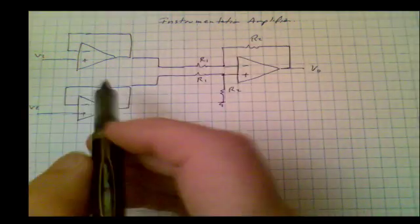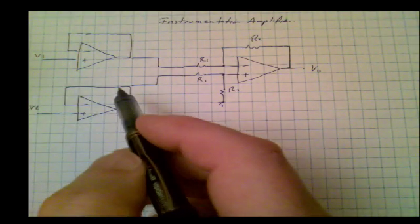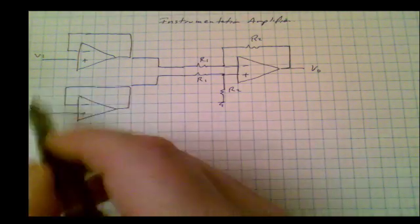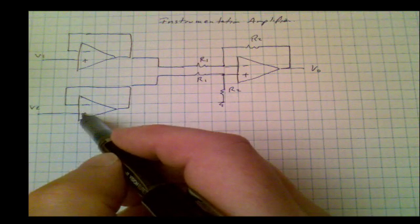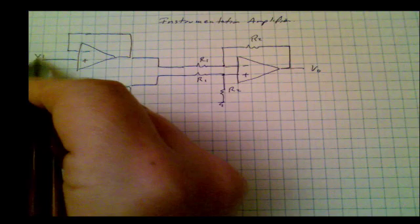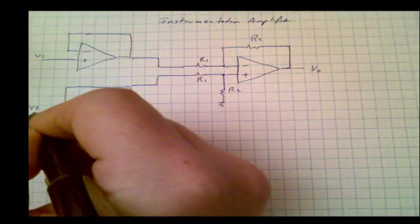First of all, we see that there are no resistors around the first amplifiers. And what that means is if this amplifier is working correctly, the inverting and non-inverting inputs are at the same voltage. So this voltage over here is voltage in one, and this is voltage in two.